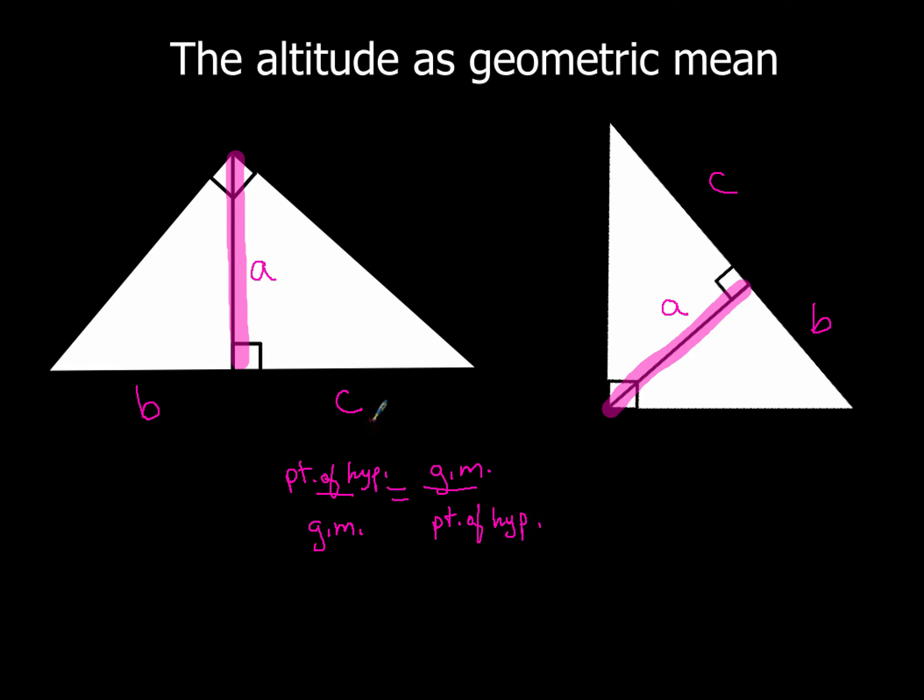Now based on the way we have our letters set up here, my formula is just going to end up being, I'm going to have A in these two spots because that represents my altitude. That's going to be the geometric mean. And then B and C are going to get slotted in these two places, and the order doesn't matter. As long as you get that setup correct, the rest of it is just going to be simply solving a proportion, which you guys should be good at at this point in your math lives.